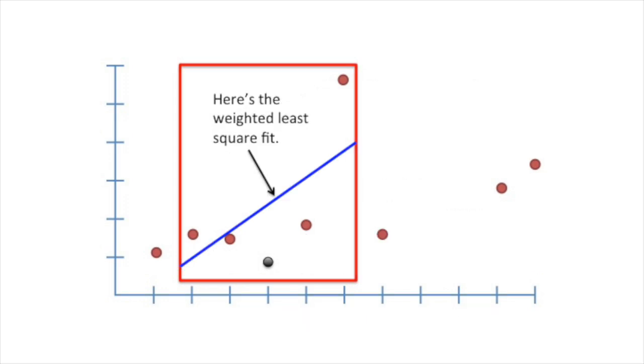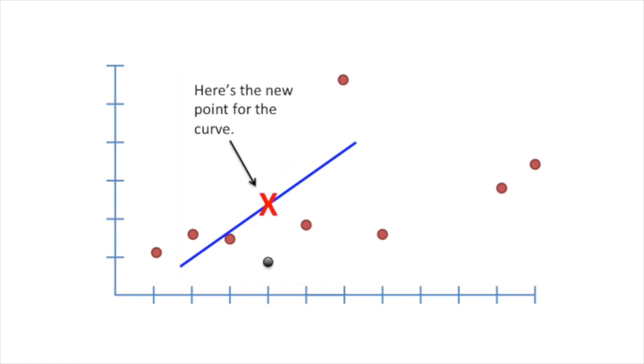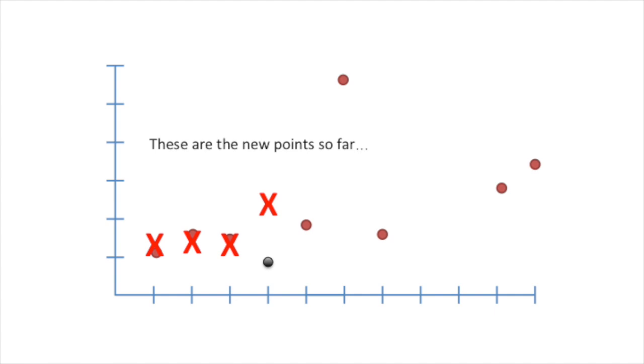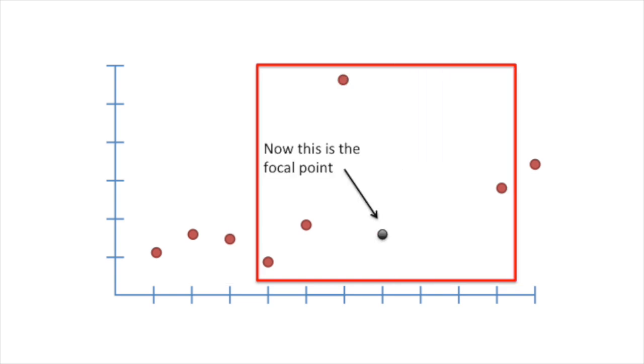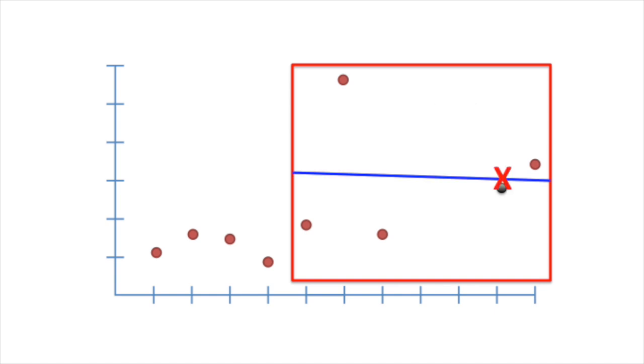Here's the weighted least squares fit. And here's the new point for the curve. These are the new points so far. Now this is the focal point. And here's our least squares fit and the new point. Now this is the focal point. And here's our least squares fit and the new point. Now this is the focal point. Okay, you're getting the idea. Moving along.